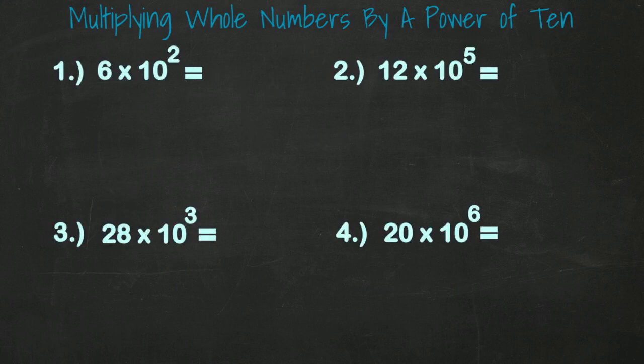Let's prove that out by looking at a few examples. Take a look at these four first. First example, 6 times 10 squared. We know that 10 squared is equal to 100. So 6 times 100 would equal 600.